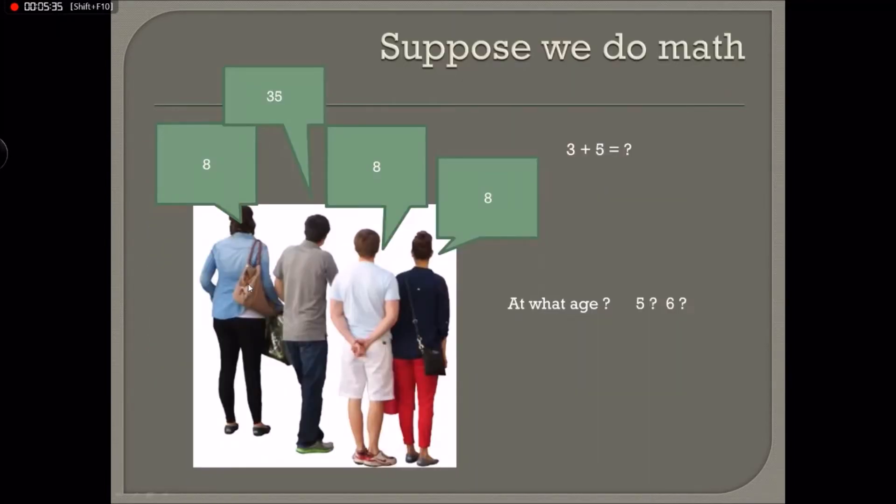So if we now do the example with math, then we have the simple equation three plus five equals, and everybody will say eight. And if somebody says 35, then we know the guy has a serious problem. So apparently he can't add numbers and he's basically putting them together and form a new number. And let's be honest, knowing that three plus five is eight is something we all could do when we were four, five or six years old.